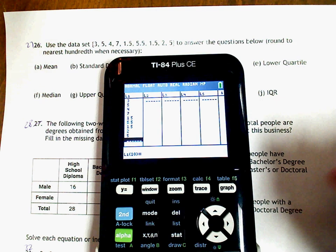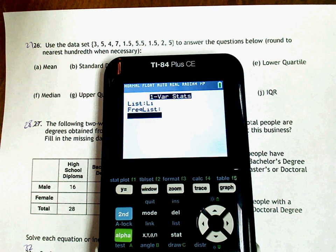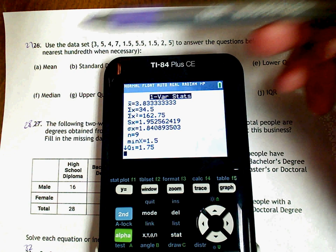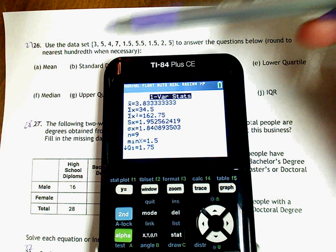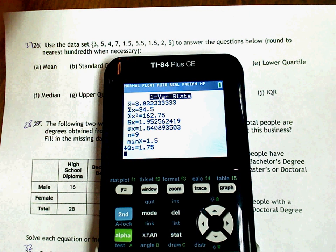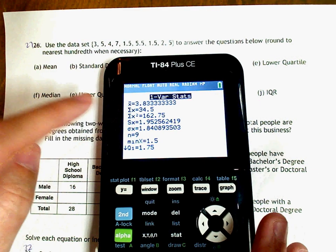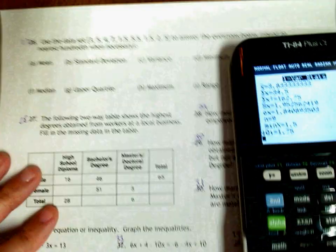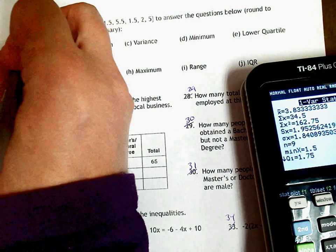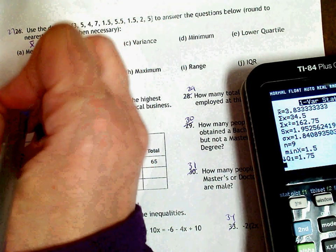Alright, so now we are going to go to STAT, over to CALCULATE and we are going to hit ENTER 3 times, or 4 times. Alright, so we are going to find, this is actually in the order that it is in your calculator except for the variance. So the X with the bar over it is your mean. So let's move this so you can still see it. Alright, so this is your X with the bar over it. And it says to round to the nearest hundredth. So that is going to be 3.83.